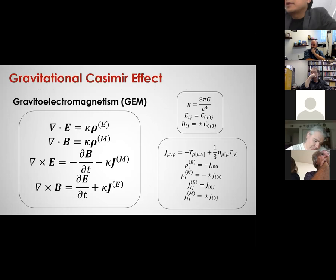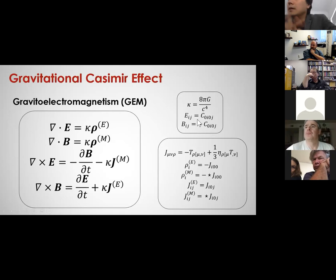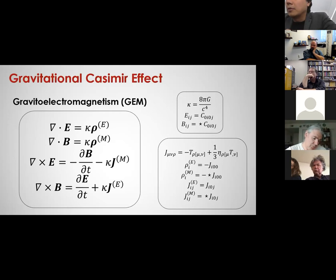To derive the gravitational Casimir energy, I'll begin with the gravito-electromagnetic formalism of the Einstein field equations, or GEM for short. Here, E and B are the components of the Weyl tensor, which represents the gravitational waves. E is called the gravito-electric field component, and B is the gravito-magnetic field component. J is like a matter current. The GEM formulation of the Einstein field equations very much resembles Maxwell's equations, and it is this analogy which we will use to guide development of the gravitational Casimir effect.